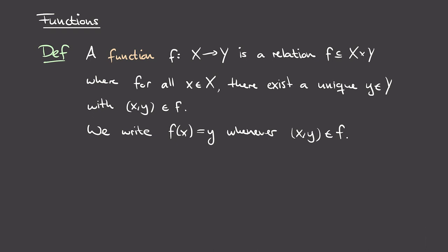I'll start with the definitions we'll need in order to write our program. The first definition is that of a function. A function, written f going from X to Y with a normal arrow, is just a relation from X to Y — a subset of the Cartesian product of X and Y — but it has to satisfy a condition: for every x in the set X, there needs to exist a unique y in Y such that the pair (x, y) lies in the relation f.